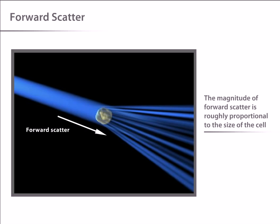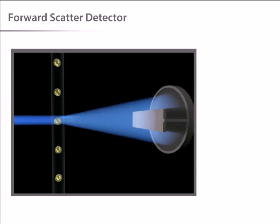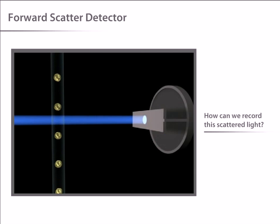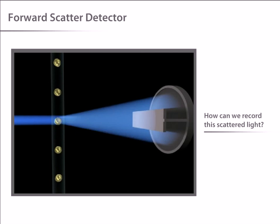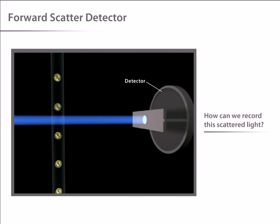The magnitude of forward scatter is roughly proportional to the size of the cell, and this data can be used to quantify that parameter. But how can we record this scattered light?